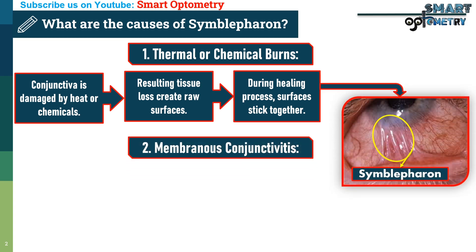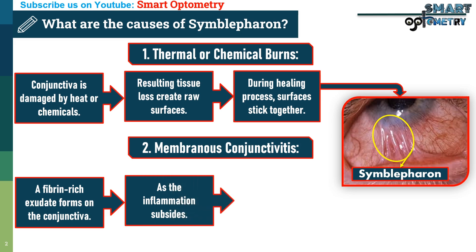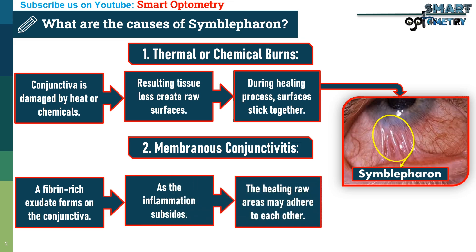2. Membranous Conjunctivitis: in membranous conjunctivitis, a fibrin-rich exudate forms on the conjunctiva. As the inflammation subsides, the healing raw areas may adhere to each other, causing Symbolpheron.